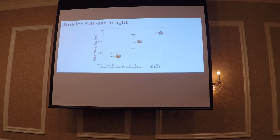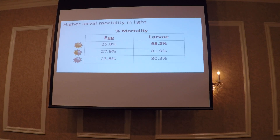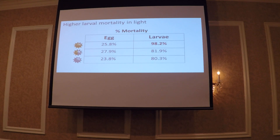Another observation was that the yolk sacs in the larvae at hatch in the light treatment were smaller compared to the other two treatments. Interestingly, the yolk sacs in the no-light treatment were the largest. Cisco eggs have their yolk sacs to feed on throughout egg development, but they also need some of that yolk sac left over to continue feeding for the first two or so weeks after hatch, to help them switch to exogenous feeding. Finally, we saw higher larval mortality in the light treatment. While egg mortality was similar for all three treatments, there was a pretty high mortality for larvae in the light treatment. You can start to paint a picture of how the small yolk sac size and the large larval mortality could be linked — and we can get at that idea by bringing in the transcriptome results.